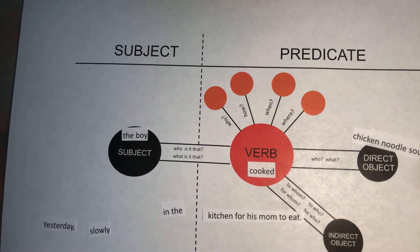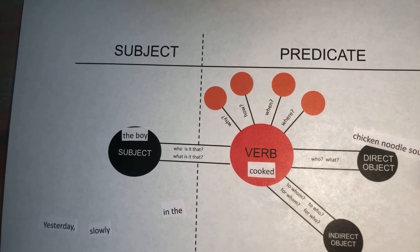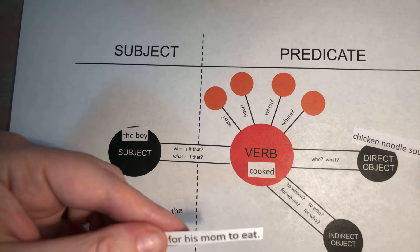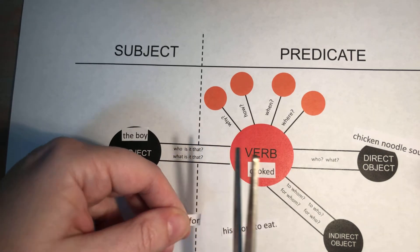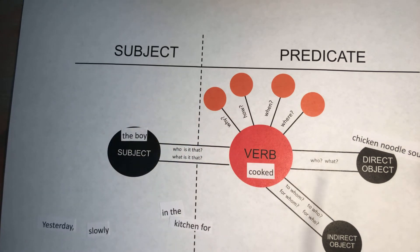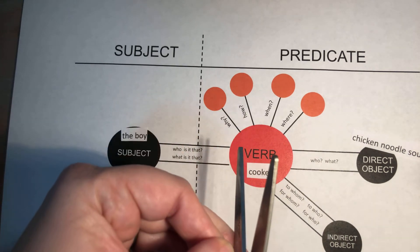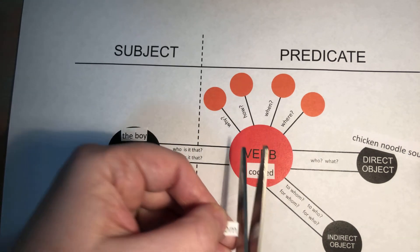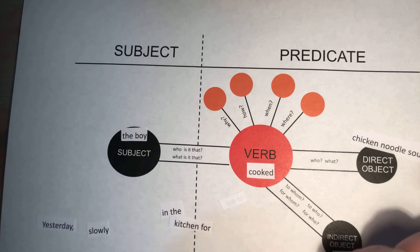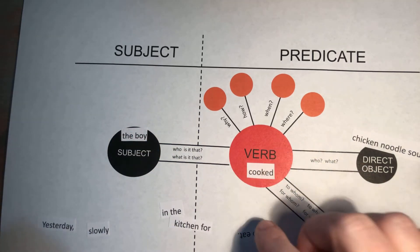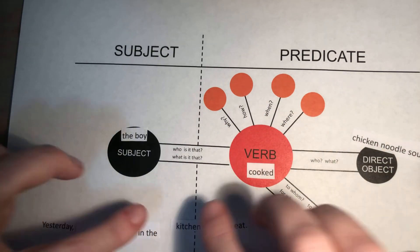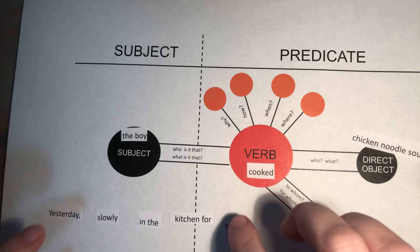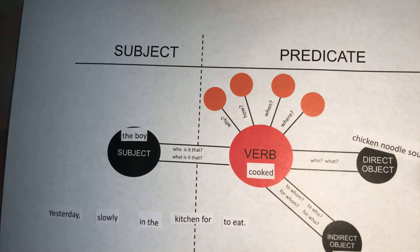And who did he cook chicken noodle soup for? He cooked it for his mom. So let's cut out 'his mom.' Okay, and let's turn our words around. So now we're still left with these words right here. Let's see if we can figure out where they go.